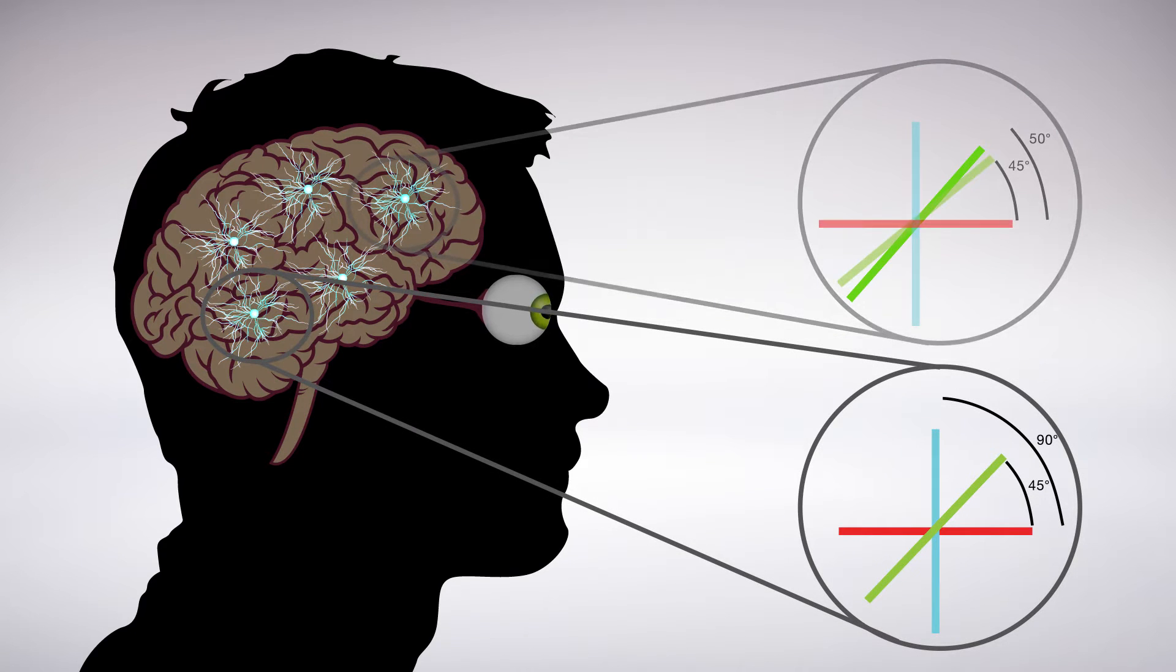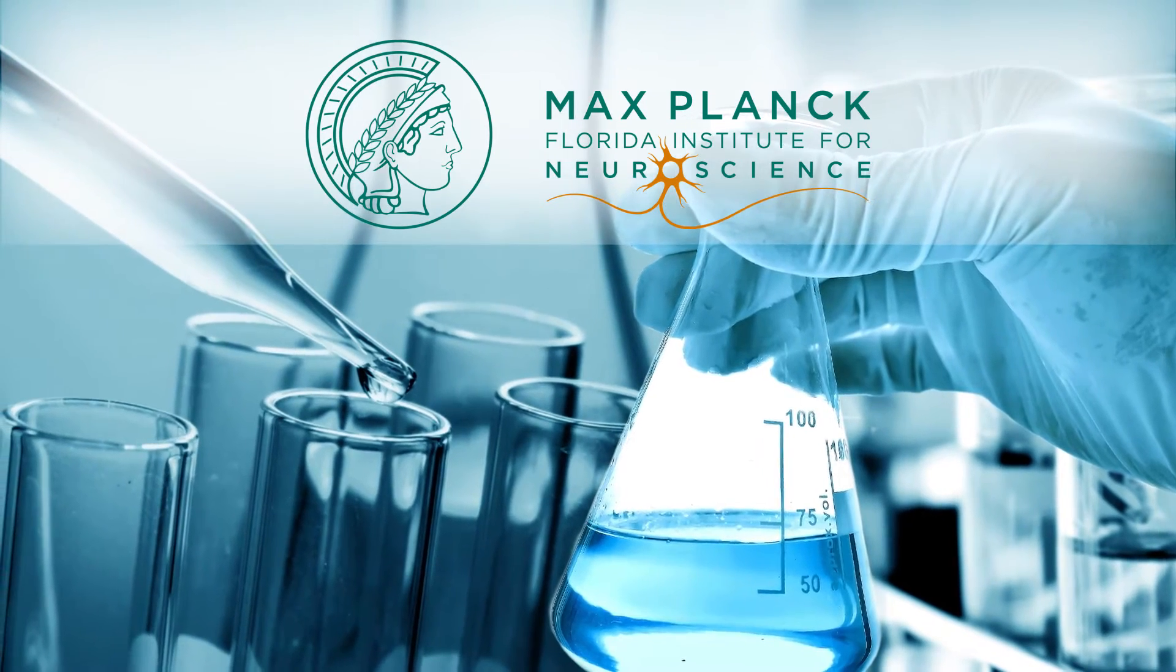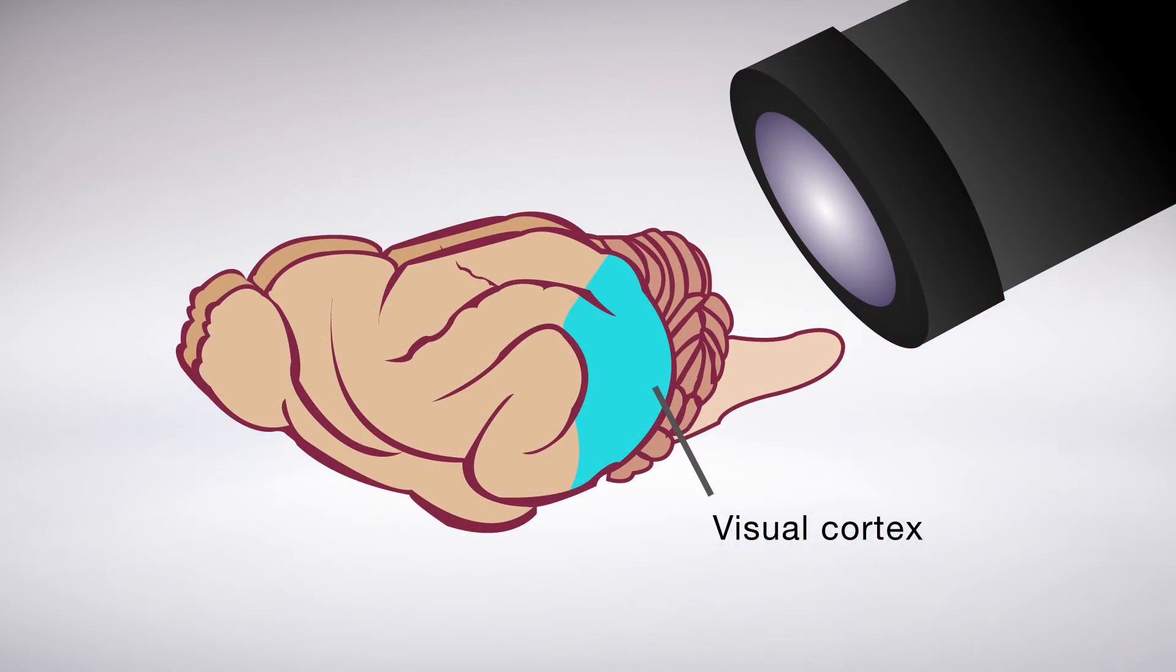To uncover the mechanisms responsible for these differences in orientation selectivity, researchers in David Fitzpatrick's lab at the Max Planck Institute for Neuroscience in Florida used in vivo two-photon calcium imaging to visualize the responses of individual neurons in the ferret visual cortex.